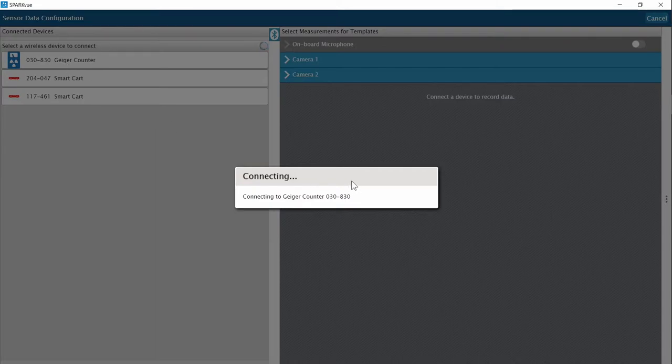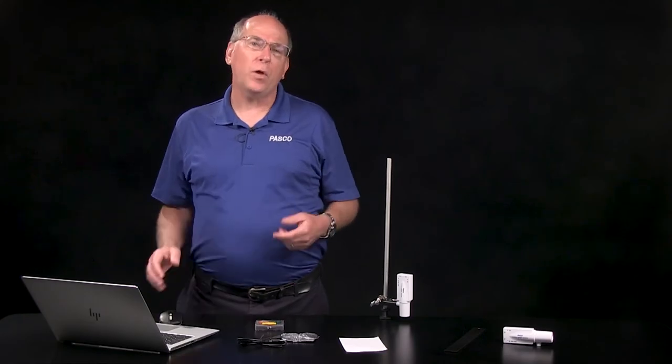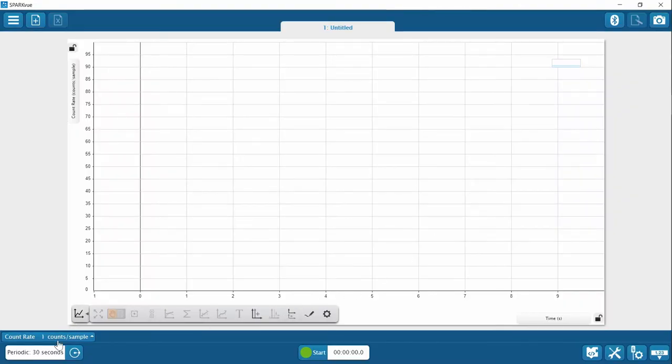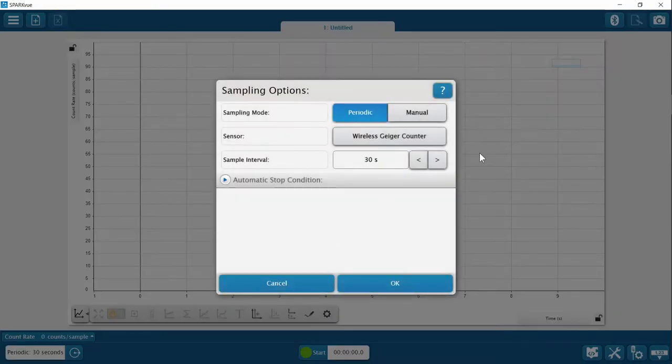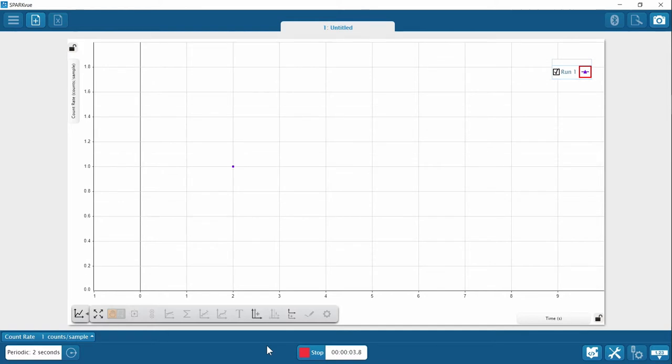The default is counts measured in a 30-second period. The time interval can be changed to anything from one hour to a tenth of a second. I'm going to set it to two seconds and click Start. You can see the background count appear after each two-second interval. Increasing the interval would increase the number of counts represented by each point on the graph.